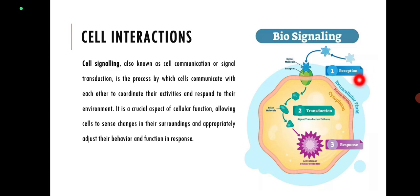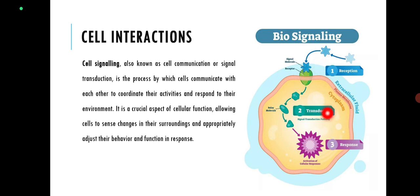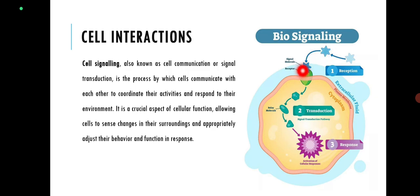In the picture you can see three steps are mentioned: reception, transduction, and response. Reception is the first step. The star-like structure represents a signaling molecule, which binds on the surface of the cell. Every cell has receptors on its surface — this is the starting point where the signaling molecule binds. Once the interaction between the signaling molecule (the ligand) and the receptor happens, conformational changes occur.